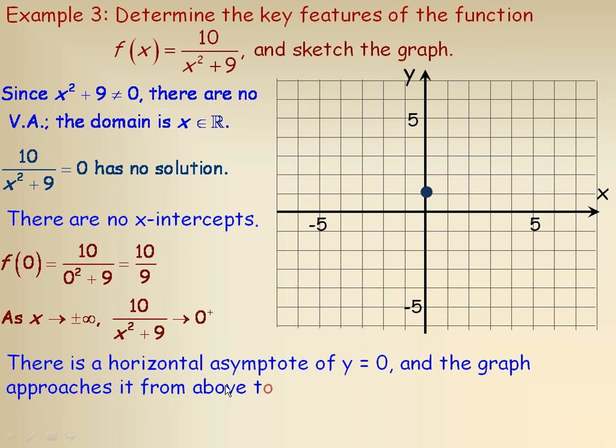So there's a horizontal asymptote of y equals zero, and the graph approaches it from above to the far left and the far right.